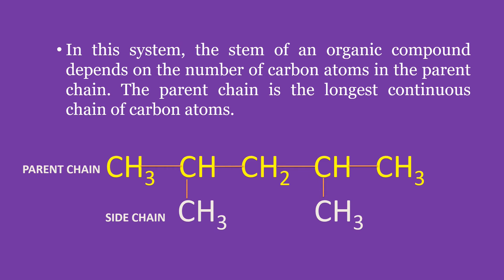In this system, the stem of an organic compound depends on the number of carbon atoms in the parent chain, which is the longest continuous chain of carbon atoms. Based on our example, the 5-carbon chain in yellow is the longest continuous chain in this molecule, and thus is called the parent chain. The parent chain has two smaller groups of molecules attached to it, called sidechains or alkyls, which have fewer carbon atoms compared to the parent chain.